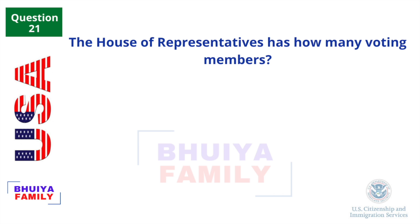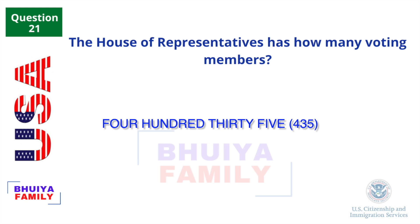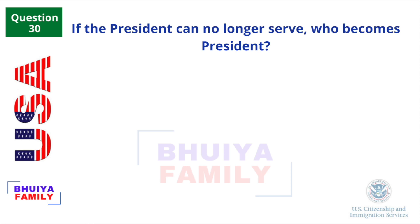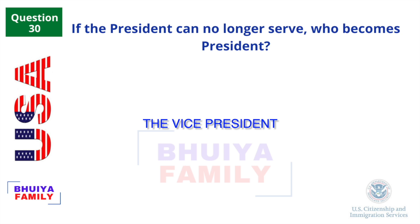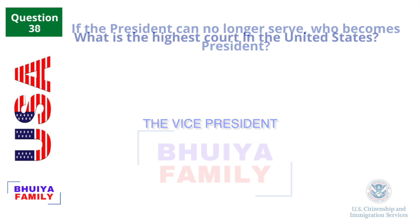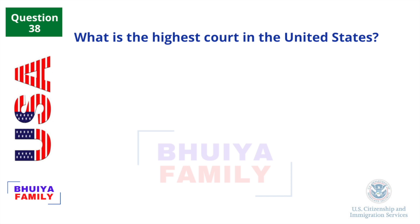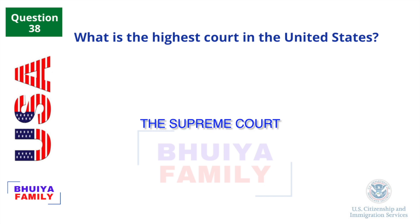The House of Representatives has how many voting members? 435. If the President can no longer serve, who becomes President? The Vice President. What is the highest court in the United States? The Supreme Court.